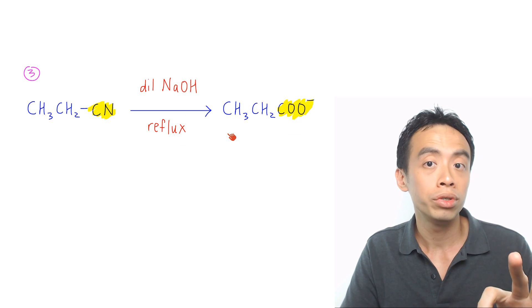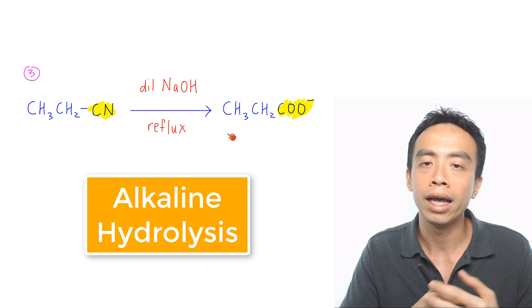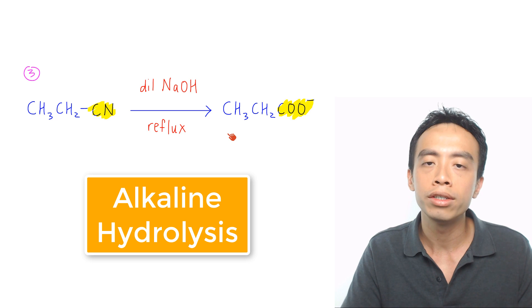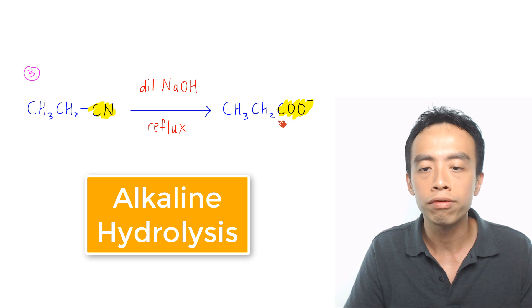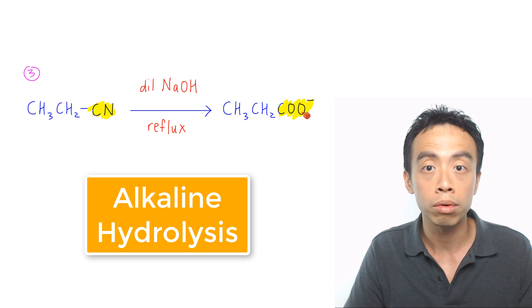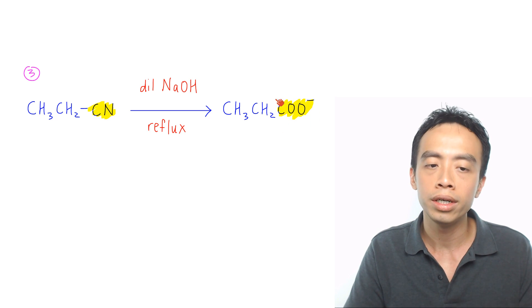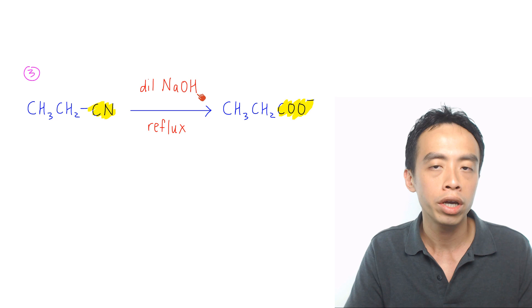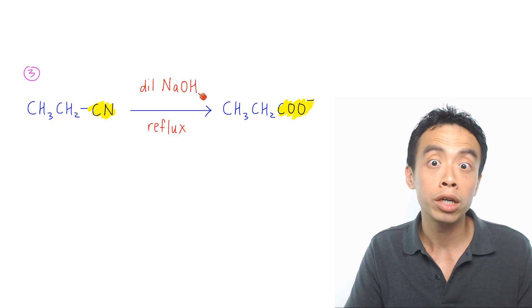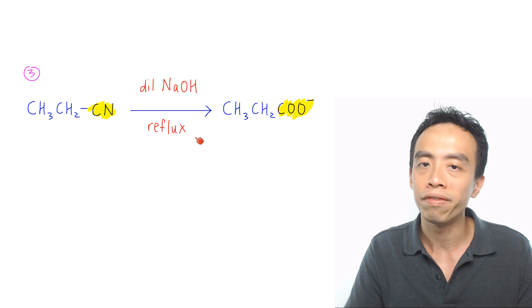Must-know reaction number 3 is the alkaline hydrolysis of nitrile to form a salt of carboxylic acid. This is done using dilute NaOH, or NaOH aqueous reflux.